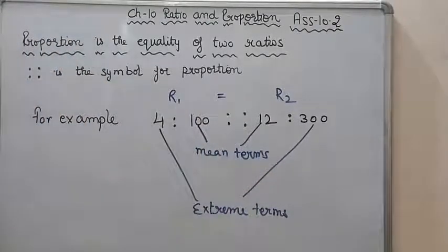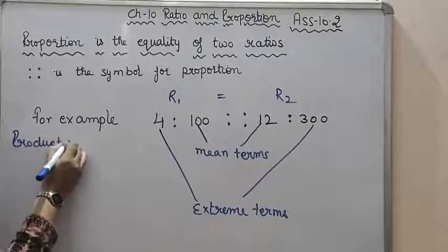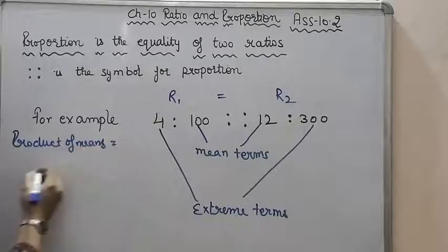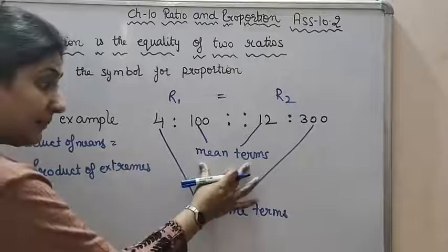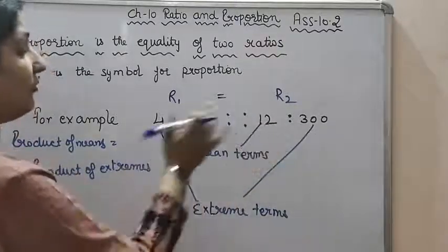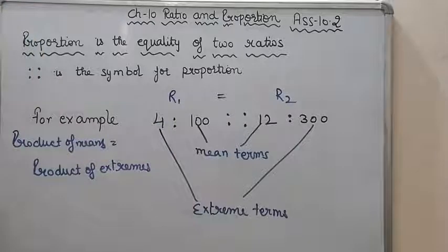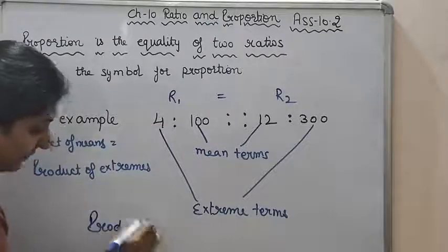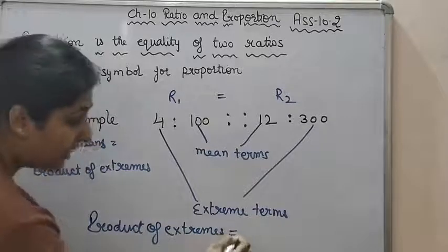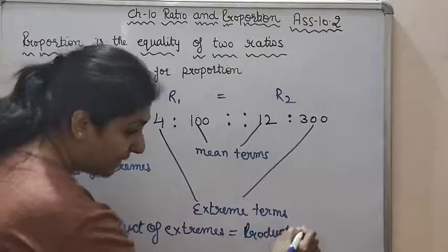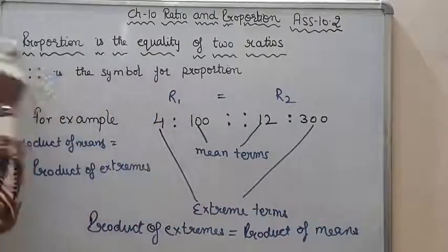And if two ratios are in proportion, then product of means is equals to product of extremes. Means, mean terms ka product, these two, will equal the product of the extreme terms. So this is the property of a proportion. This property is used a lot to check whether the given ratios are in proportion, and also to find out missing terms of a proportion. This is the most important property of a proportion.